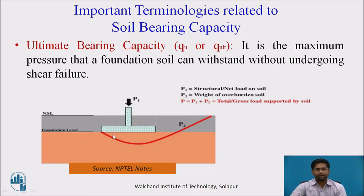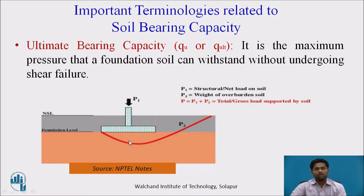In this particular figure, this entire red color line is indicating the shear failure line. This is the foundation. P2 is nothing but overburden pressure, and P1 is nothing but the weight of superstructure, which is in the downward direction. Therefore, total weight acting beneath the foundation: P equal to P1 plus P2.